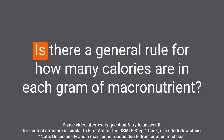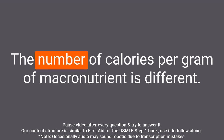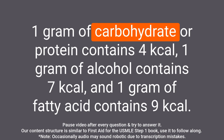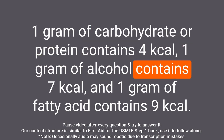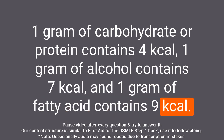Question: Is there a general rule for how many calories are in each gram of macronutrient? Answer: The number of calories per gram of macronutrient is different. One gram of carbohydrate or protein contains 4 kcal, one gram of alcohol contains 7 kcal, and one gram of fatty acid contains 9 kcal.